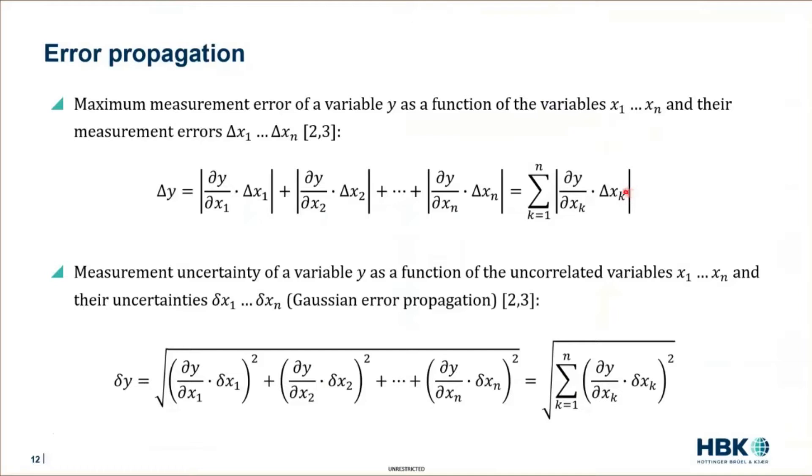If we talk about typical measurement uncertainty, we are talking about random errors. If we know the probability distribution and the standard deviation of those variables, then we can do the error propagation with the Gaussian error propagation formula. As you can see in the result, this is not the sum of the absolute values, but it is a squared sum or geometric sum.